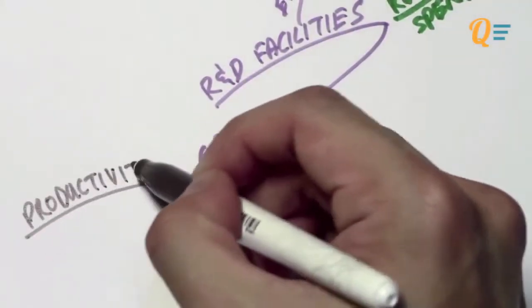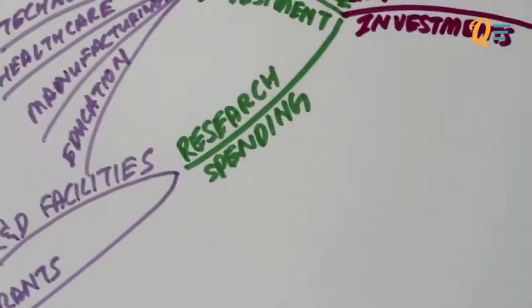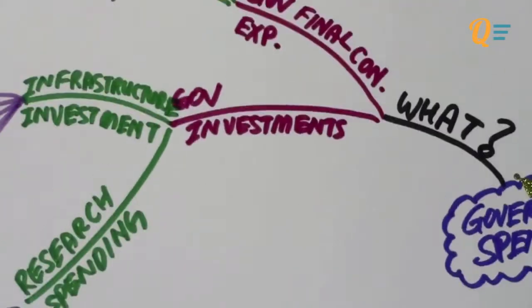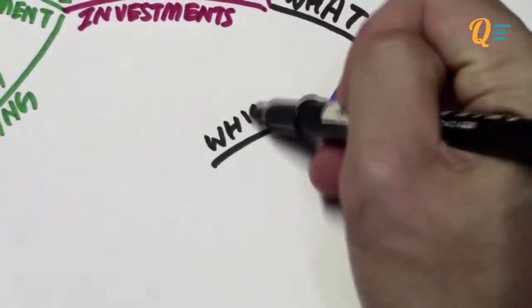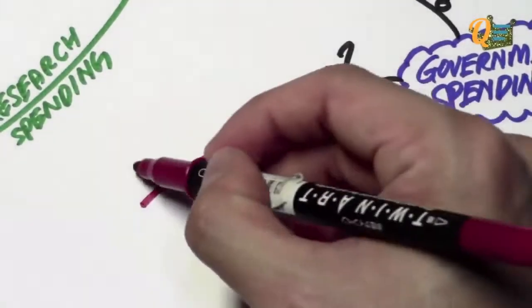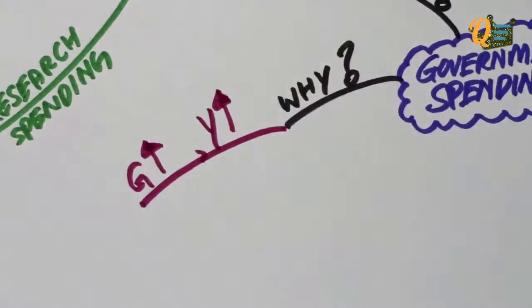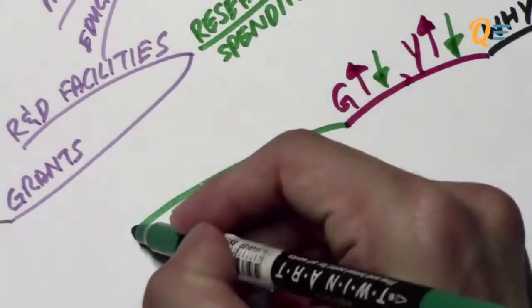Can you identify any grants in your country that promote productivity and innovation? The next question you should ask yourself is why would the government want to spend so much, and why is government spending part of the national accounts? The answer is simple: when the government increases its spending, GDP increases as well, and when the government cuts its spending, GDP is going to fall.